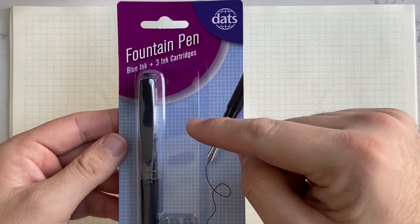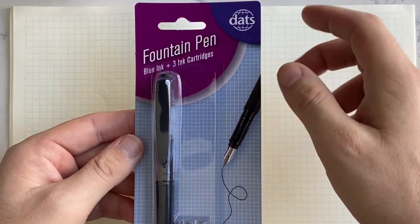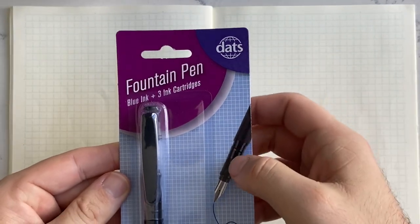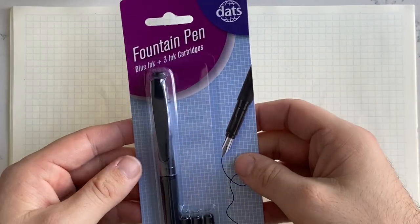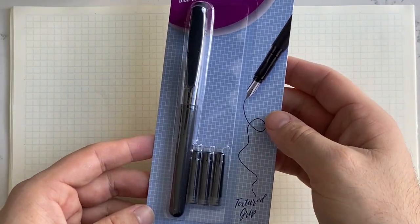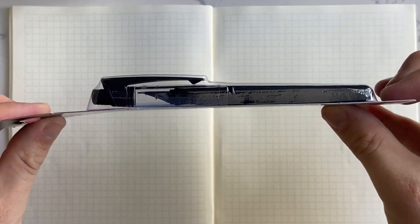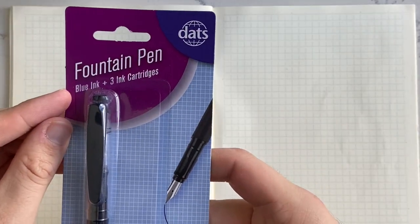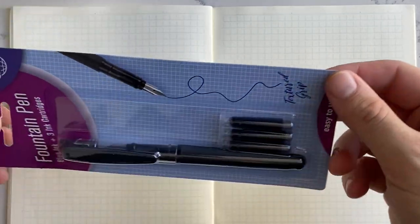This was here in Australia at a little shop in regional New South Wales for $2.99. It is by the brand DATS, which is a brand that does very budget line stationery that appears in a number of these kinds of stores. Little cardboard with plastic blister pack, little fountain pen, three ink cartridges. It says here blue ink plus three ink cartridges, so whether there's one in there, we will see.